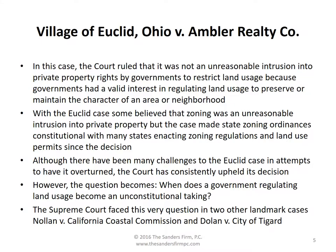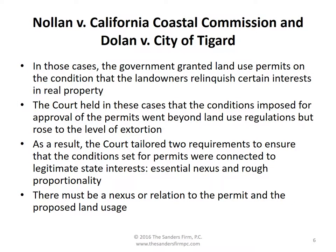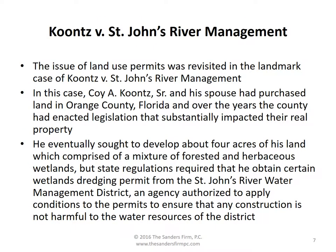Although there have been many challenges to the Euclid case in attempts to have it overturned, the court has consistently upheld this decision. However, the question becomes: when does a government regulating land use become an unconstitutional taking? The Supreme Court faced this very question in two other landmark cases — Nolan v. California Coastal Commission and Dolan v. City of Tigard. In those cases, the government granted land use permits on the condition that the landowners relinquish certain interests in real property. The court held that the conditions imposed for approval of the permits went beyond land use regulations and rose to the level of extortion. As a result, the court tailored two requirements to ensure that the conditions set for permits were connected to legitimate state interests: essential nexus and rough proportionality. There must be a nexus or relation to the permit and the proposed land usage.